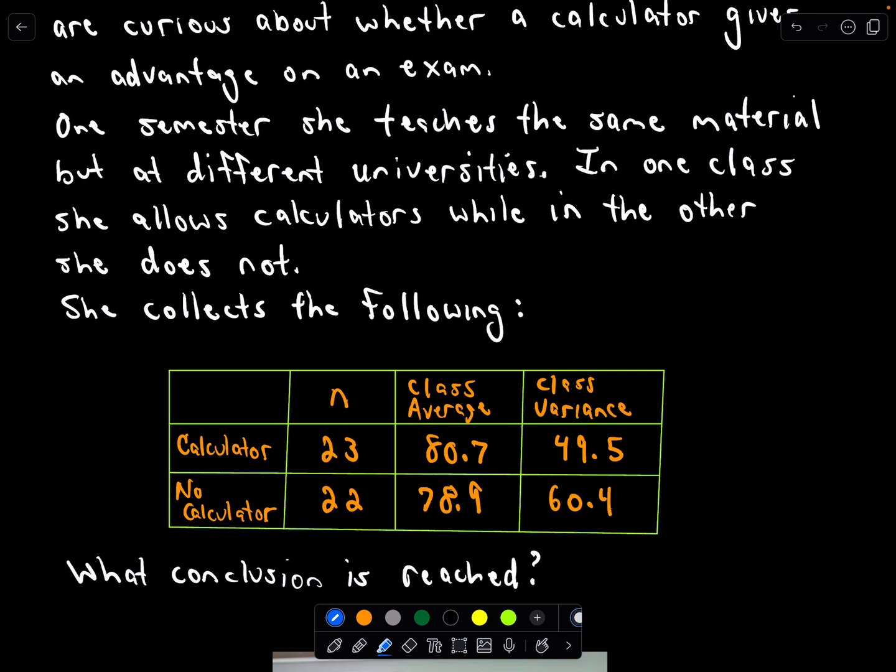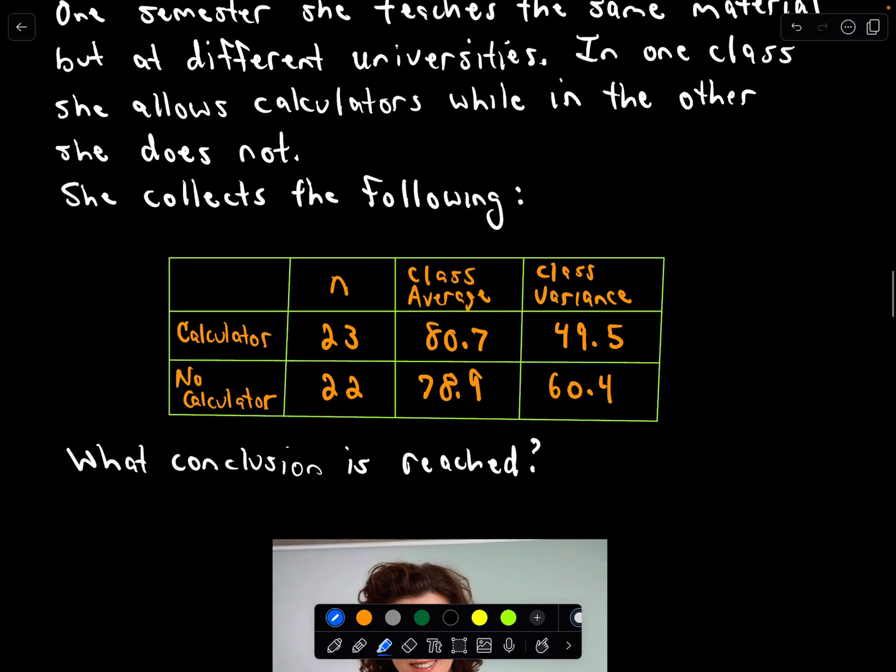These are things you should be thinking about in a quote-unquote real-life scenario because you would have to consider does it make sense to compare these means, what about the standard deviations. You really need to be asking yourself these other questions. In one class she allows calculators while in the other she doesn't. So let's assume she's teaching the exact same material, just one class gets the calculator the other doesn't. She collects some data.